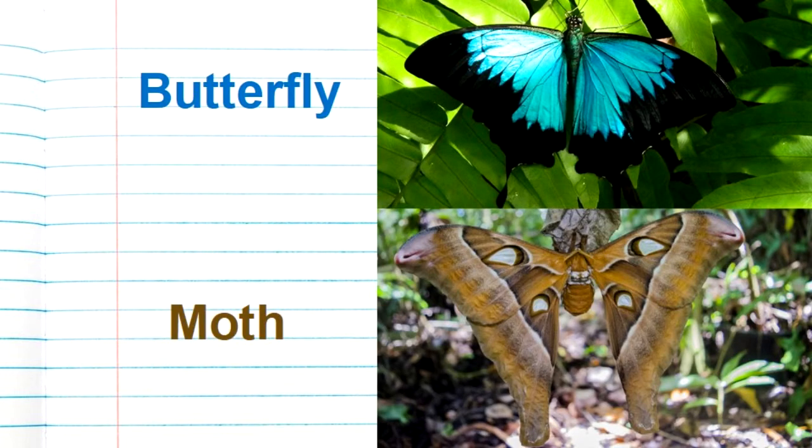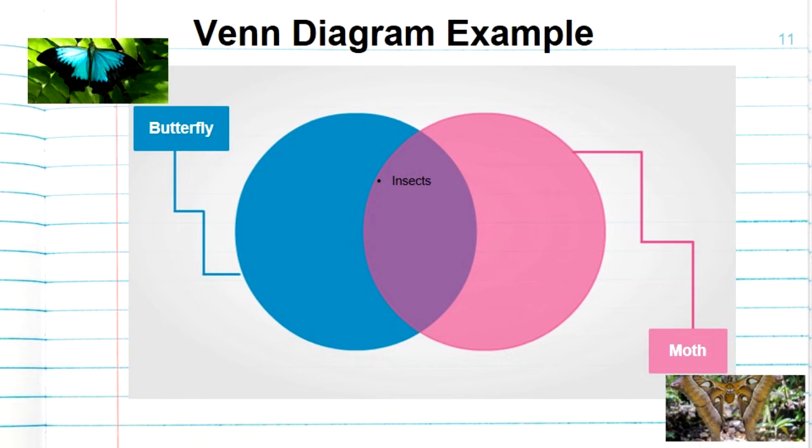Outside the overlapping areas we write specific traits of each subject. Let's now create a Venn diagram and compare and contrast between a butterfly and a moth. First of all, we will start in the overlapping area and we will mention the similarities.